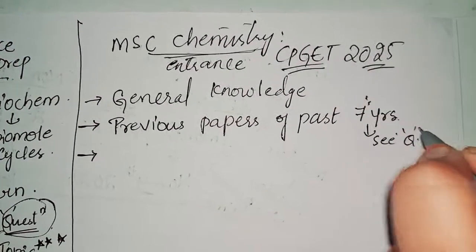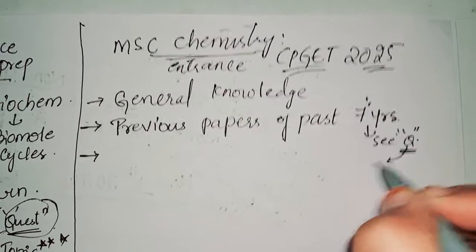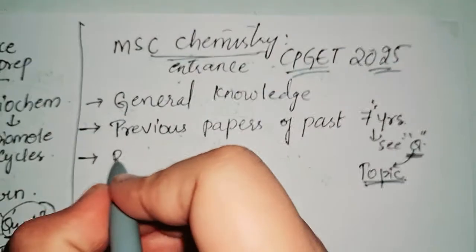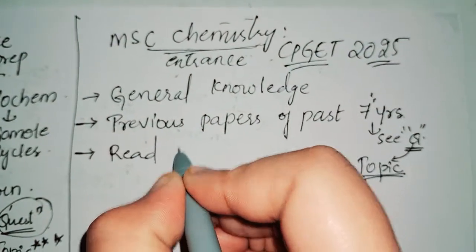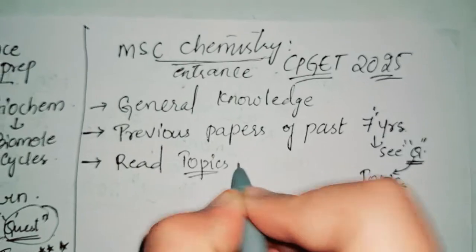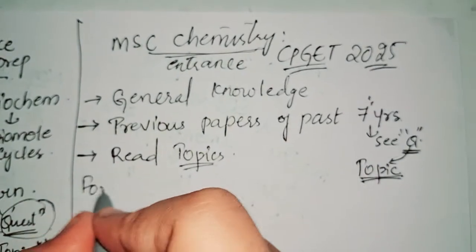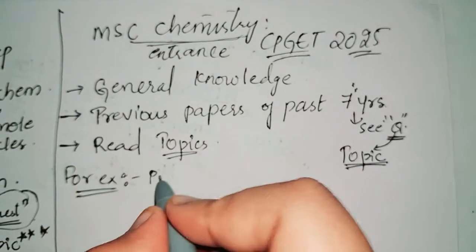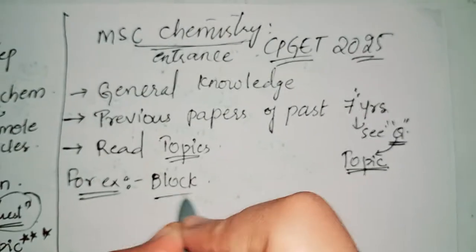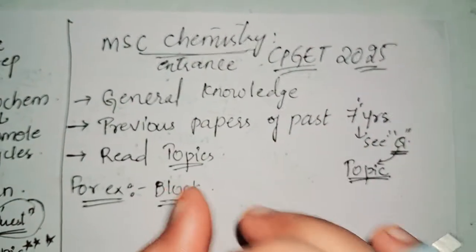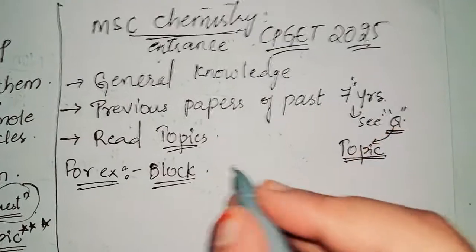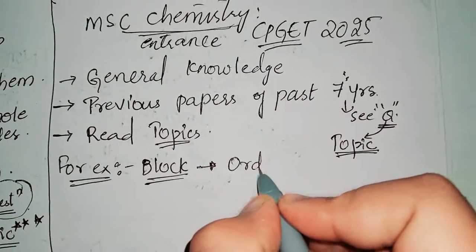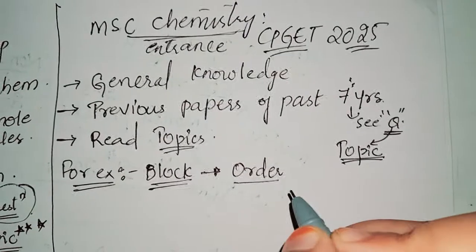After that, grab the topic of those questions and read topics. For example, I'm giving an example like from the P block, like blocks, let's talk about the blocks, okay? From X block, B block, D and F block, whatever it may be, they can ask you questions related to orders, basic order.